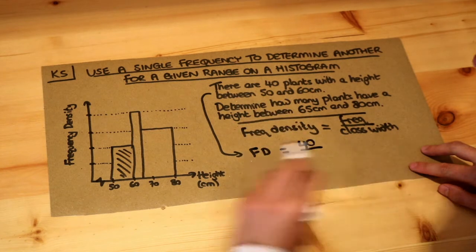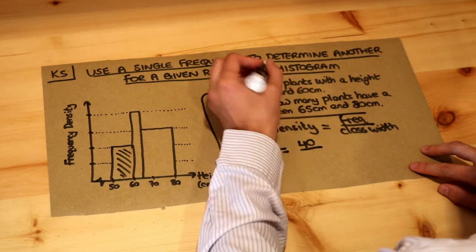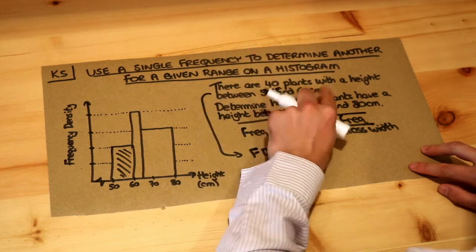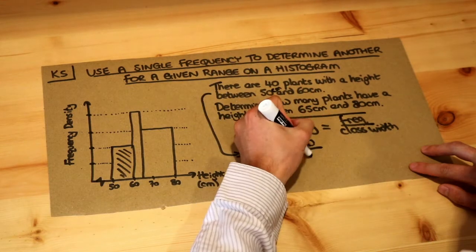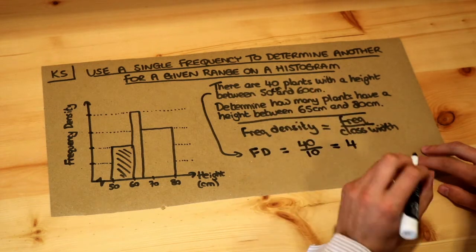Remember, the class width is the width of the bar, the width of the interval, or 50 centimeters to 60 centimeters—that's a width of 10. And 40 divided by 10 is 4, so that's a frequency density.